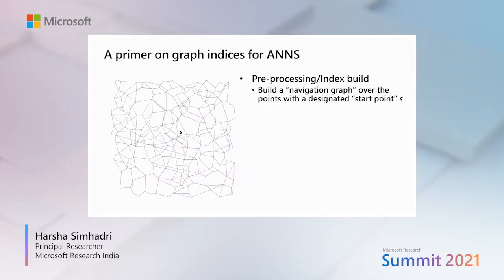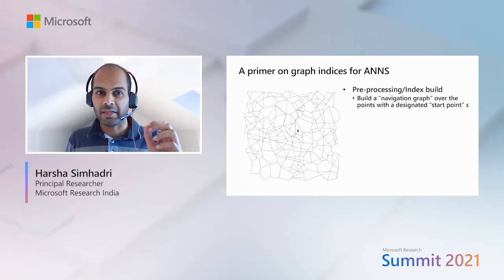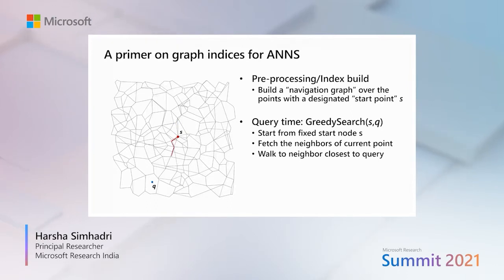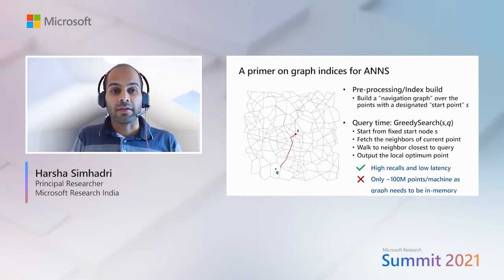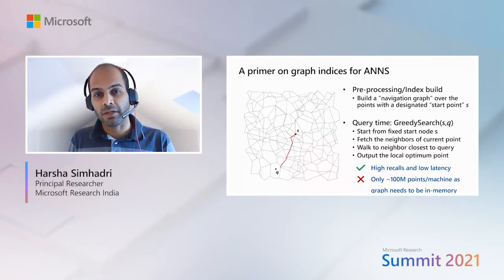Since both these systems are based on graph indices, here's a quick primer on how graph indices work for NNS. In the pre-processing or index building stage, we build a navigable graph over the points in the dataset with a designated start point S. In order to answer a query Q, we start at S, look at the neighbors of S, and walk over to the node that is closest to the query. We repeat this iteration greedily until we reach convergence and output the local optima. It's been shown that you can build graphs so that this fast greedy search algorithm converges to the right answer most of the time, providing high recall with low latency.